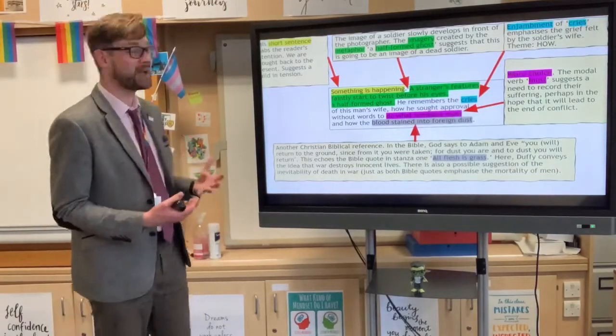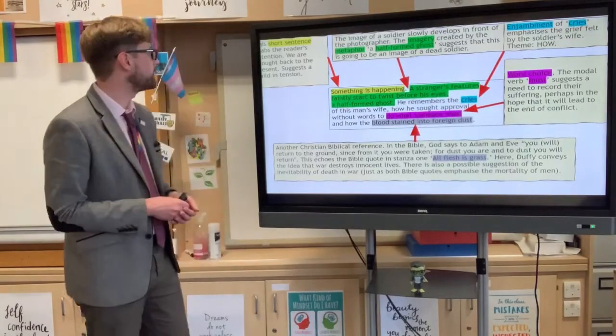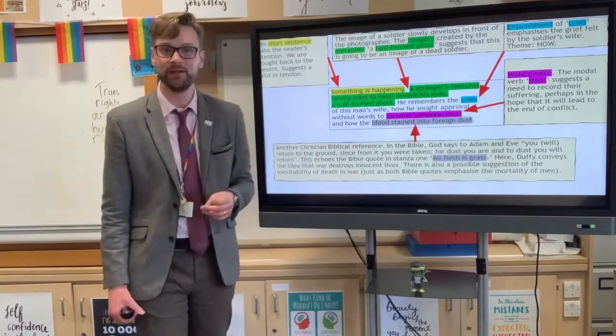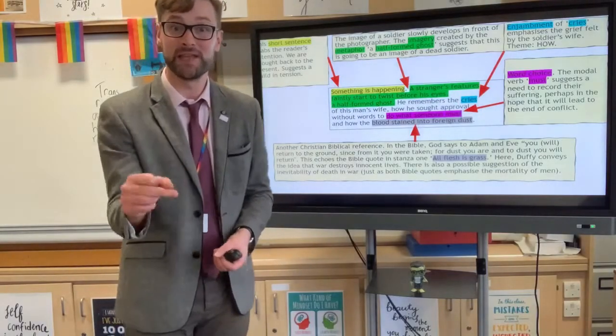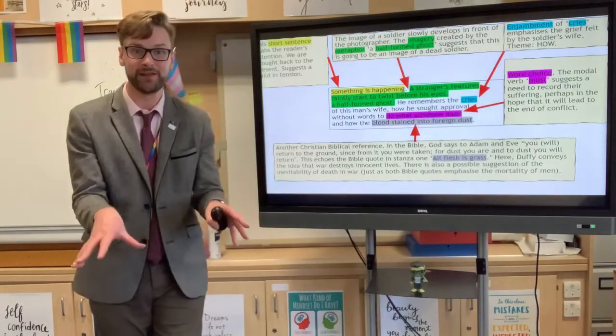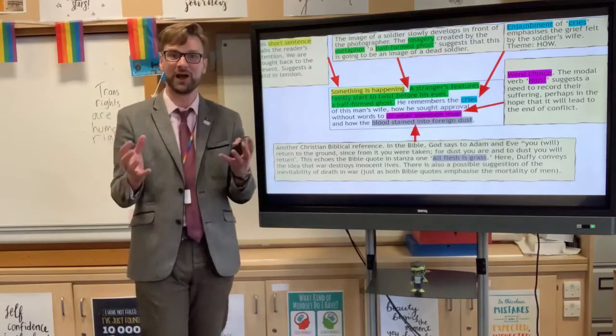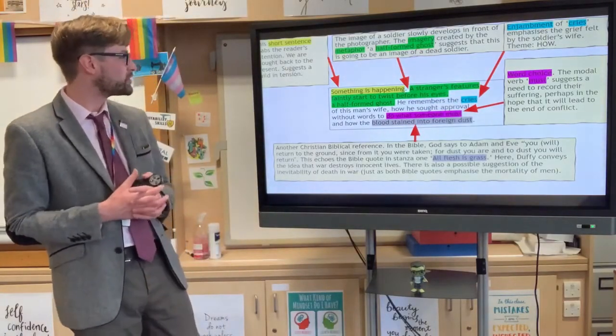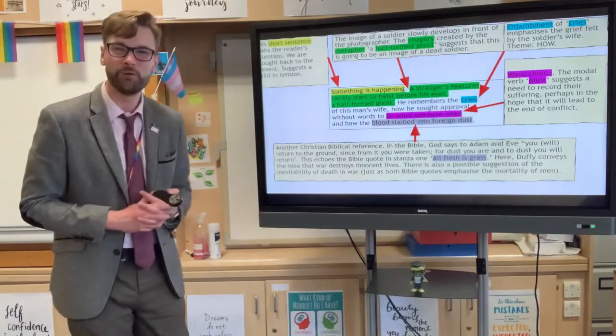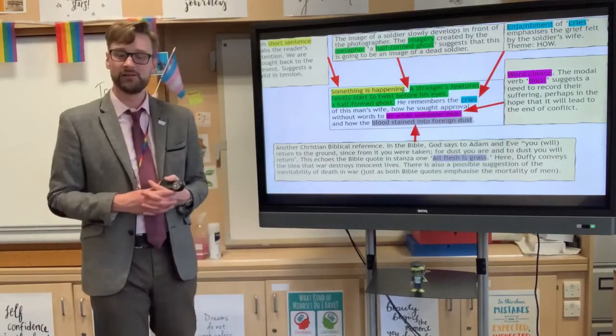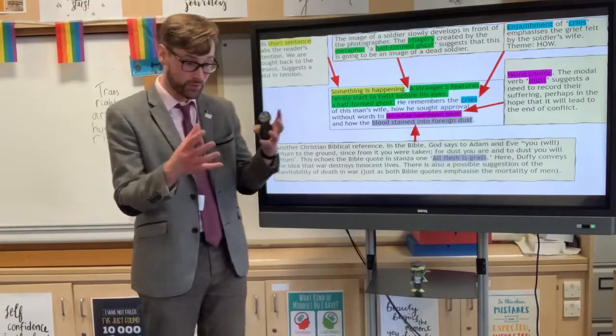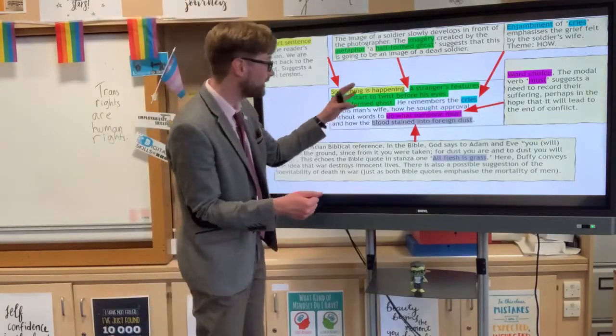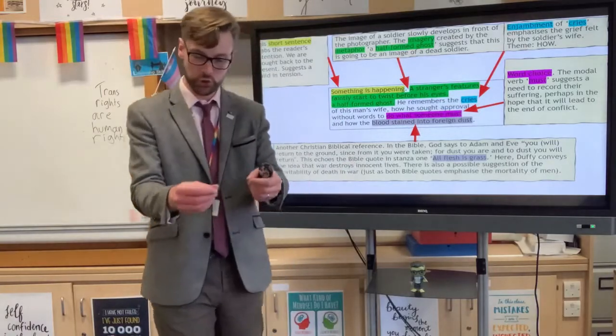Again, another stanza with so much that we can say about it. Now we kick off with this short sentence. Something is happening. It's almost as if Duffy's trying to grab your attention. She's saying, look, look over here. Something's happening. A short and punchy sentence to grab your attention as a reader. A stranger's features faintly start to twist before his eyes. A half-formed ghost. Now again, we have something which works on a metaphorical as well as a literal level here. Because what's literally being described is the picture slowly developing. Remember, this is before digital photography.